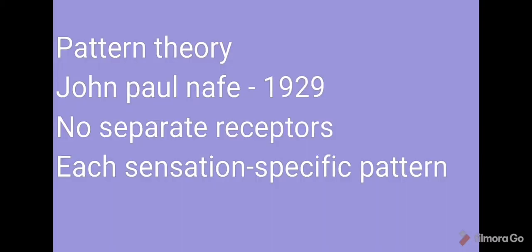The fourth theory is the pattern theory postulated by an American psychologist in 1929. He said that there is no separate receptors for each sensation. He says that each sensation relays a specific pattern or sequence of signals to the brain. Brain then takes this pattern and deciphers it. That is, depending on which pattern the brain receives correlates with the sensation felt.